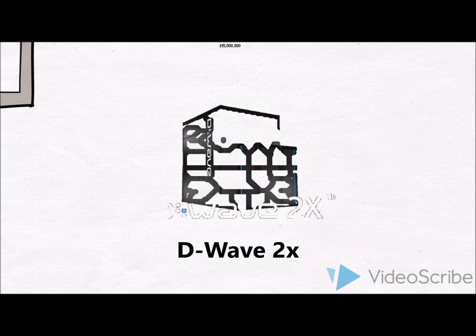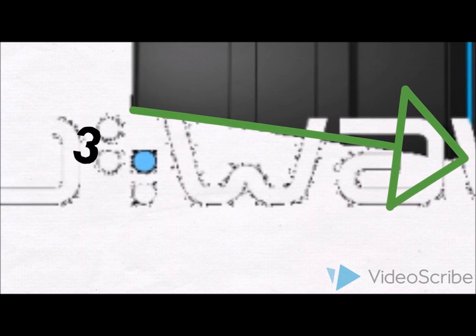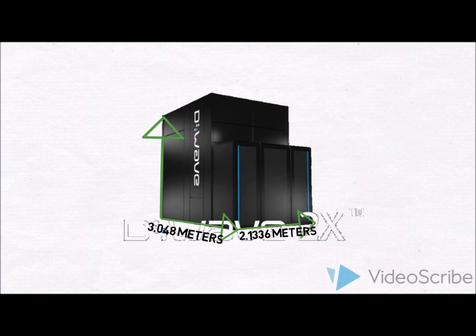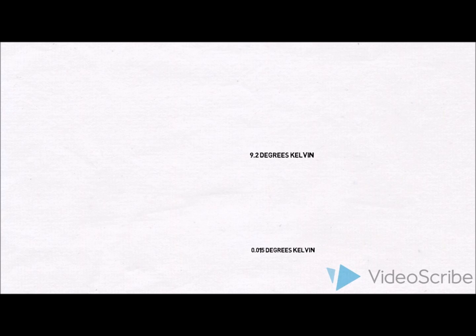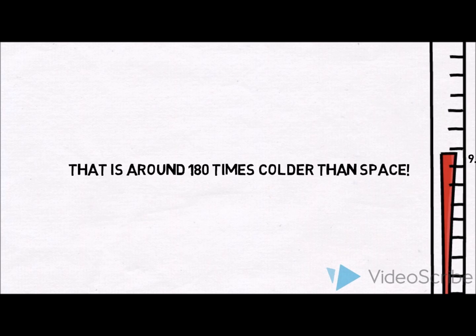The D-Wave 2X is 3m x 2.1m x 3m. The processing chip has over a thousand niobium loops on it, which act as qubits when cooled down below 9.2 degrees Kelvin. This system cools down to 0.015 degrees Kelvin to allow the qubits to work better.